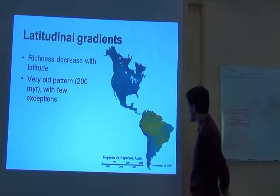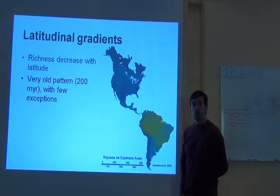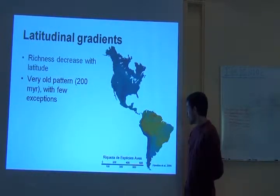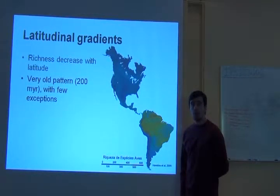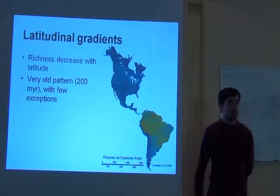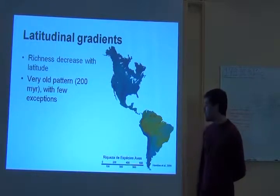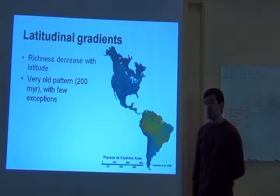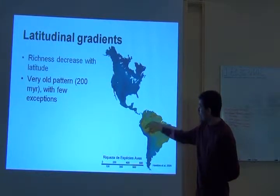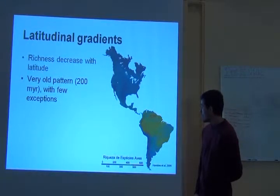There is also the imprint of several other geological features in the map of species richness. For example, here you see this very large mountain chain in South America called the Andes. For some reason birds tend to like the slopes of the Andes, and you will see very high species richness in Ecuador, Colombia, Peru, and Bolivia.